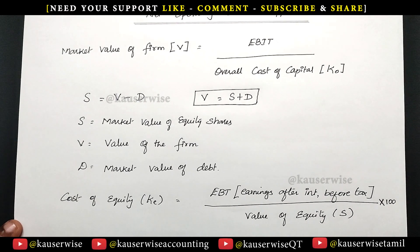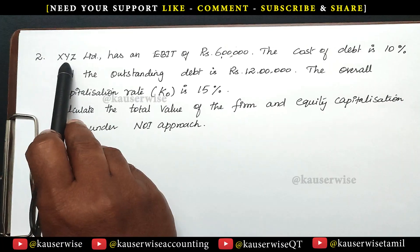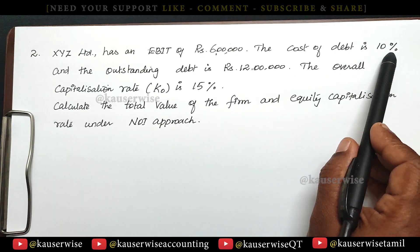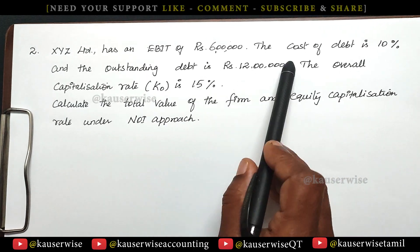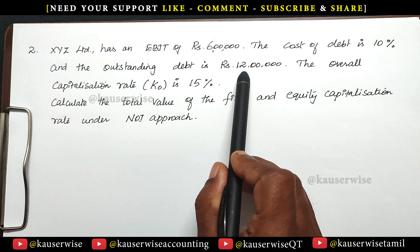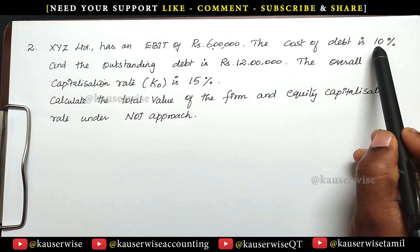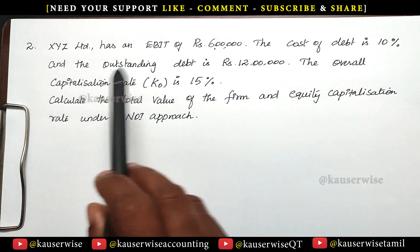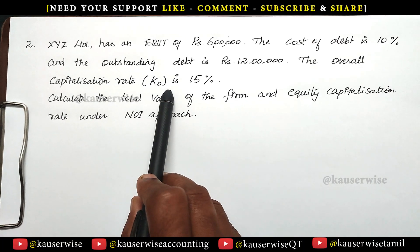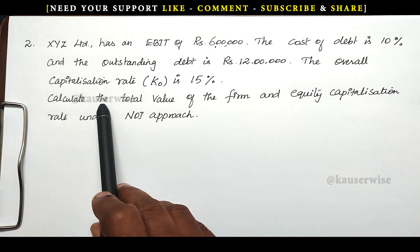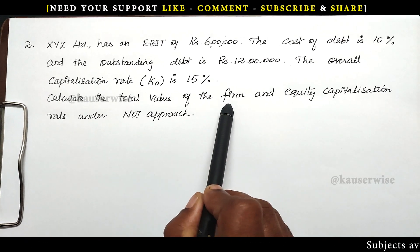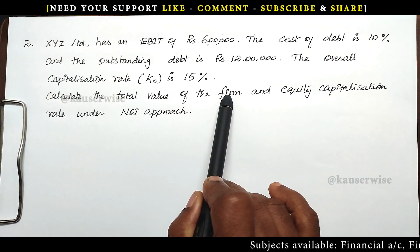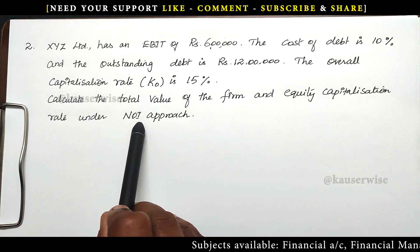Now let's see the numerical problem. XYZ Limited has an EBIT of 6 lakhs, the cost of debt is 10%, and the outstanding debt is 12 lakhs. Interest will be calculated as 10% on 12 lakhs. The overall capitalization rate KO is given as 15%. Calculate the total value of the firm (V) and the equity capitalization rate (KE) under the net operating income approach.